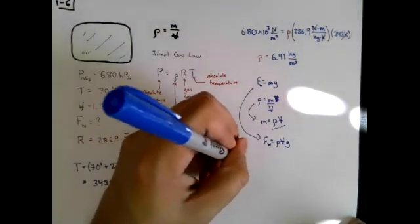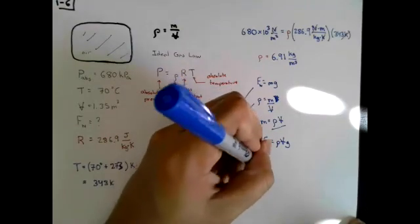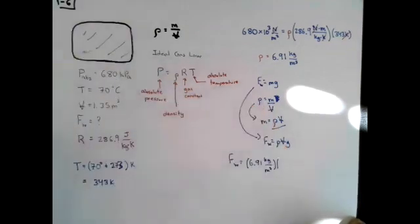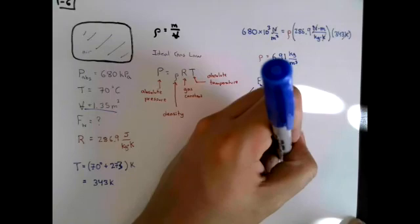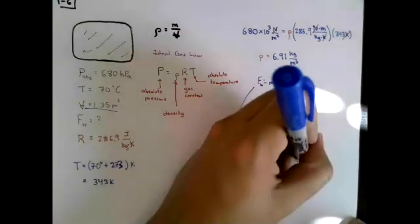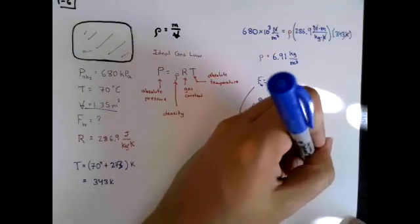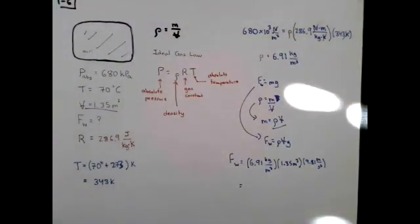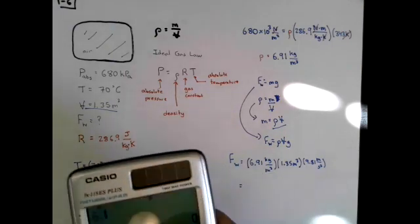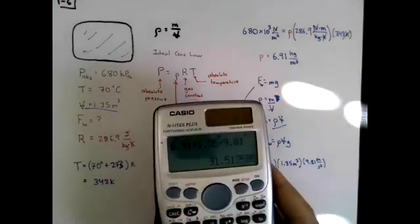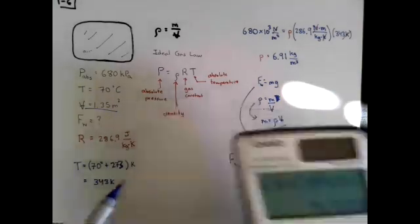So the weight of the gas is equal to the density of the gas, 6.91 kilograms per cubic meter, multiplied by the volume of the gas, 1.35 meters cubed, multiplied by gravitational acceleration, 9.81 meters per second squared. This is easier to plug into my calculator. So we have 6.91 times 1.35 times 9.81. I get 91.5 Newtons.